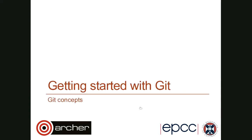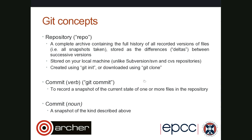Let's get started with Git by clarifying the basic concepts. Once these are clear you'll have a much better idea of what's going on under the hood in day-to-day usage and when things go wrong. The repository — also called repo — is basically all the data: a complete archive containing a full history of all the versions of files recorded in the past, stored as differences (deltas) between successive versions.